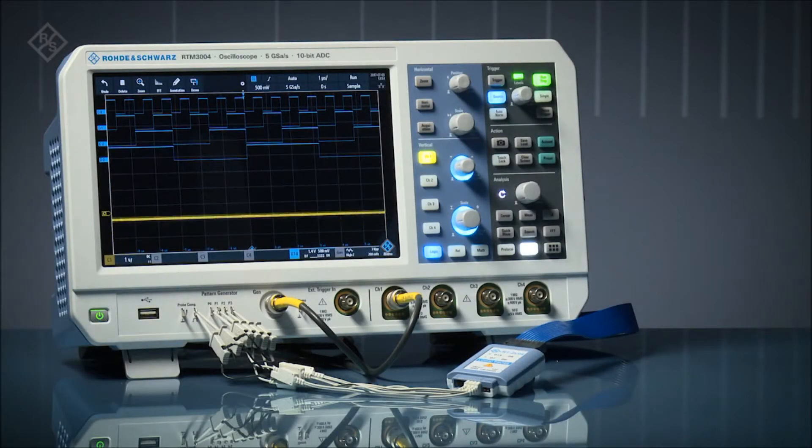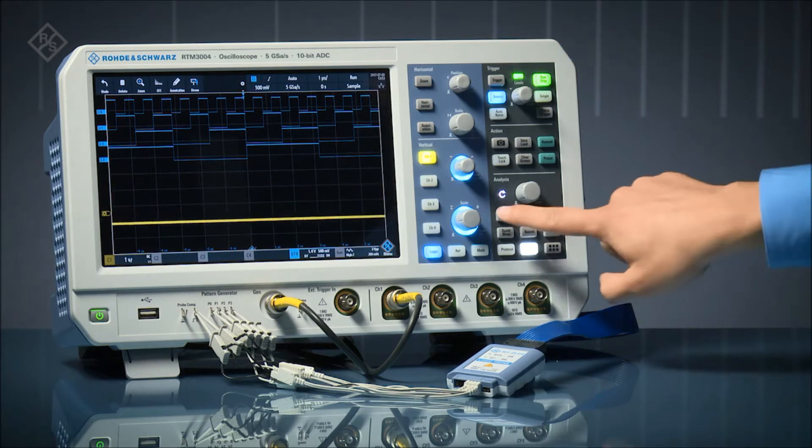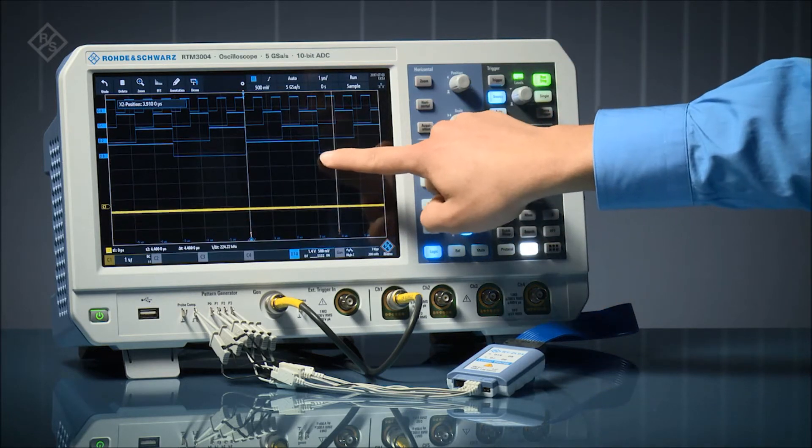Rohde & Schwarz RTM 3000 series oscilloscopes feature a 16-channel integrated logic analyzer option. Use the digital channels to see timing relationships.